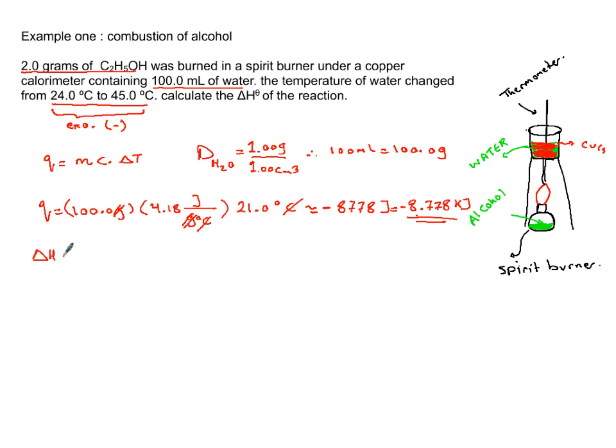Delta H, which is enthalpy of the system, is always heat divided by the moles of reactant, in this case moles of ethanol. How do you find moles when you have mass? It's mass divided by molar mass.